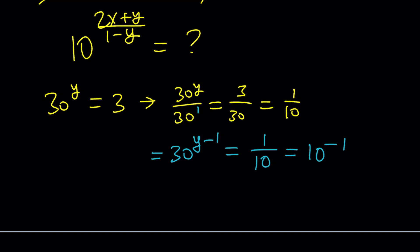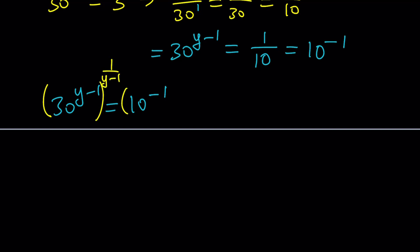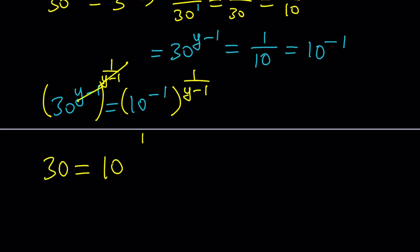We rewrite this as 30 to the power y minus 1 equals 10 to the power negative 1. Raising both sides to the power 1 over y minus 1, the left side simplifies to 30, and the right side becomes 10 to the power negative 1 over y minus 1, which equals 10 to the power 1 over 1 minus y. So 30 equals 10 to the power 1 over 1 minus y.